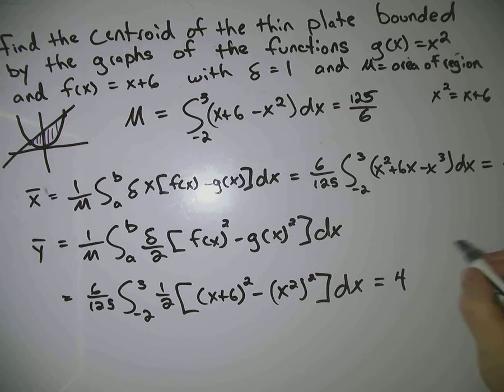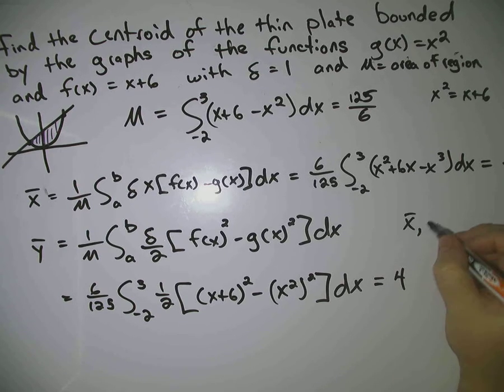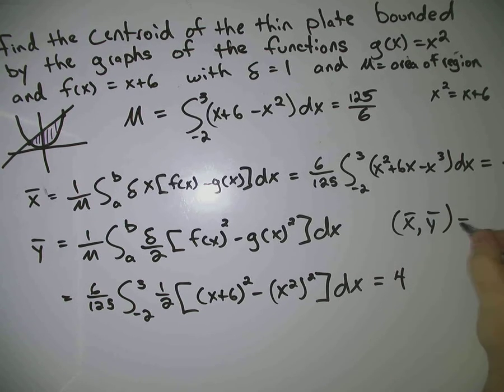So, your centroid of this region, your x bar, comma, y bar, is going to be equal to 1 half, comma, 4.